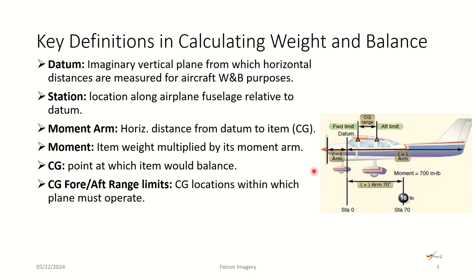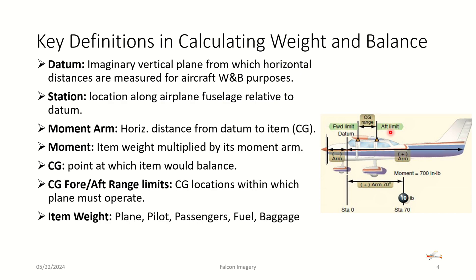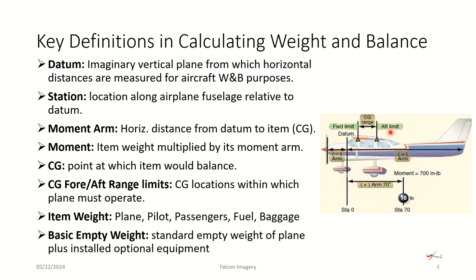There's also something known as the CG forward and aft limits. As long as the aircraft's center of gravity calculation determines that the CG is somewhere within its forward and aft limits, the aircraft will be able to be flown and maneuvered correctly through all of its normal envelope of operations. However, if the CG is determined to be beyond the forward or aft limit, we'll have negative consequences. Item weights include the basic empty weight of the plane, the pilot, the passengers, the fuel, and the baggage. The basic empty weight is the standard empty weight of the plane plus all installed optional equipment minus any usable fuel.